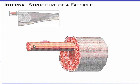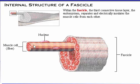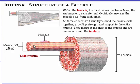This view provides a closer look at the internal structure of a fascicle. Recall that fascicles are bundles of muscle cells. Within the fascicle, the third connective tissue layer — the endomysium — separates and electrically insulates the muscle cells from each other. All three connective tissue layers — the endomysium, the perimysium, and epimysium — bind the muscle cells together, providing strength and support to the entire muscle.